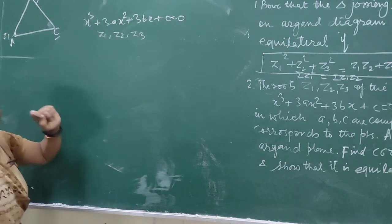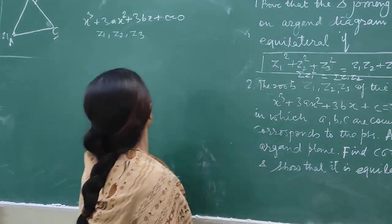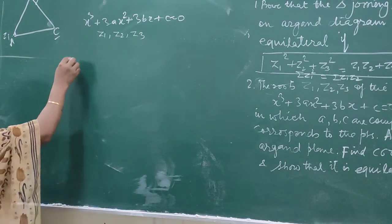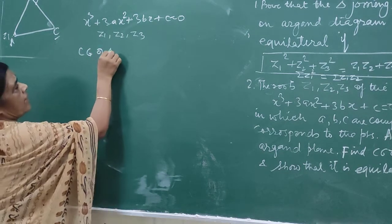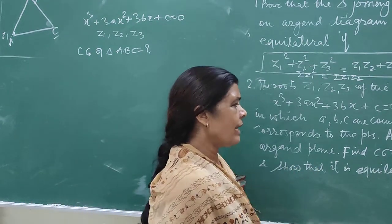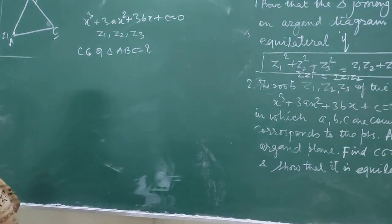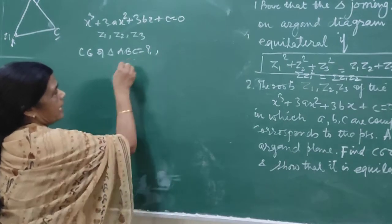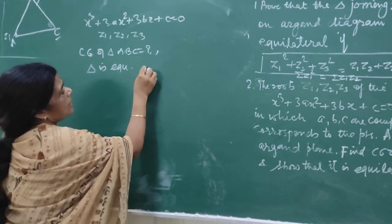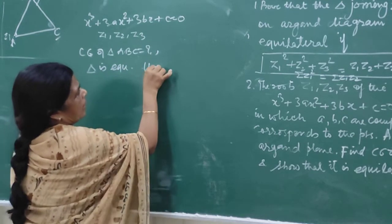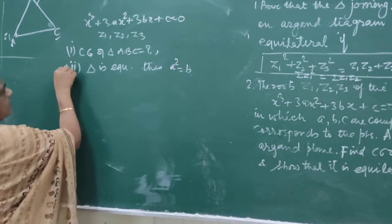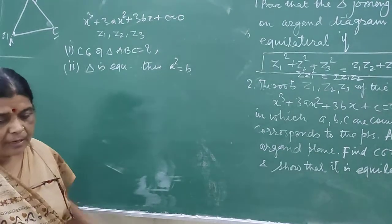Find the centroid of the triangle ABC formed by Z1, Z2, Z3 on the Argand plane. We need to find the centroid of this triangle ABC, and also prove that the triangle is equilateral if and only if a² equals b. This is the second part we need to prove.